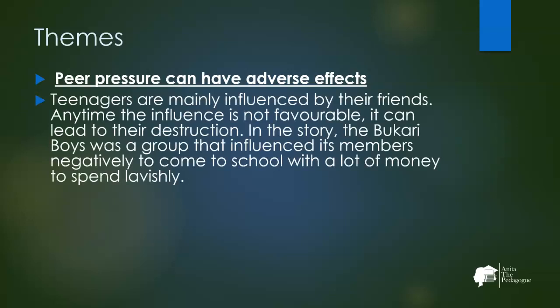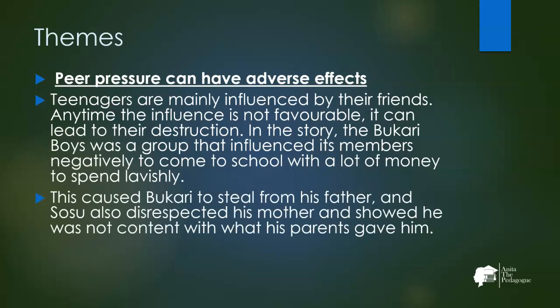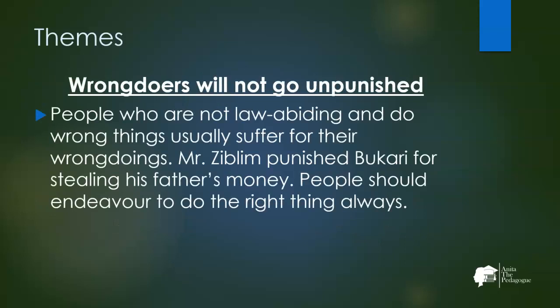Another theme is that peer pressure can have adverse effects. Teenagers are mainly influenced by their friends, and when the influence is unfavorable it can lead to destruction. The Bukhari Boys influenced its members negatively to come to school with a lot of money to spend lavishly, causing Bukhari to steal from his father and Sosu to disrespect his mother. A further theme is that wrongdoing will not go unpunished — people who do wrong usually suffer for it, as seen when Mr. Ziblim punished Bukhari for stealing his father's money.